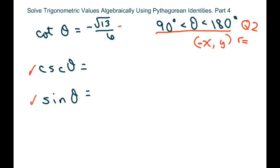So I'm going to rewrite this as cotangent is x over y. Okay, so we have our x and y: x is negative square root of 13, y is 6, and we need our r. We're going to use x squared plus y squared equals r squared.